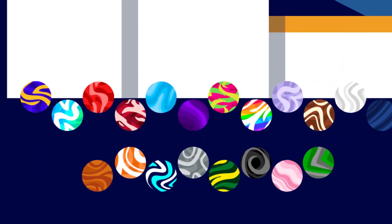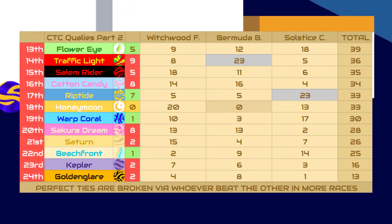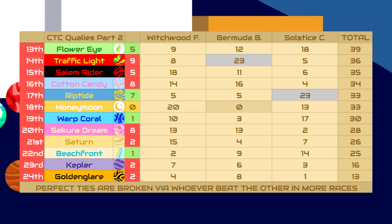For Flower Eye, Traffic Light, Stormy Reign, Con Candy, Riptide, Honeymoon, Warp Coral, Security, Saturn, Beachfront, Template, and Golden Glare, they will have to settle for going to the B League for season two.